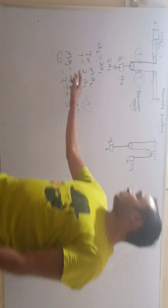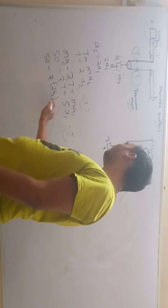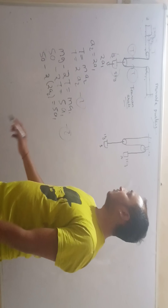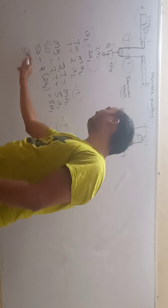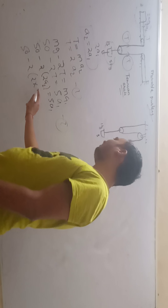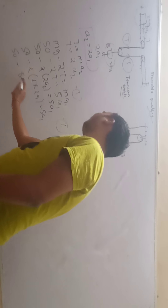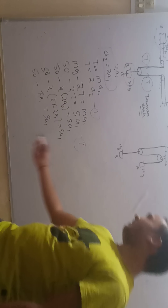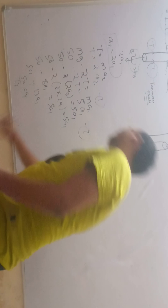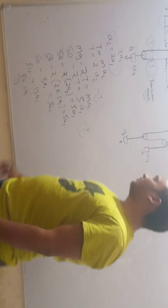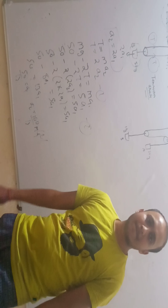Friends, the value of T is 2A2, so putting it into the second equation we get: 50 minus 2 times 2A2 equal to 5A1. And from the tension trick we know A2 equal to twice A1, so we write A2 as 2A1: 50 minus 4 times 2A1 equals 5A1, which gives 50 minus 8A1 equal to 5A1. Shifting terms: 50 equal to 13A1, so A1 equals 50/13. And A2 will be 100/13 meters per second squared.